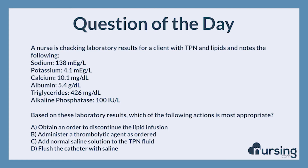Again, a nurse is checking laboratory results for a client with TPN and lipids and notes the following: Sodium, 138 mEq per liter. Potassium, 4.1 mEq per liter. Calcium, 10.1 mg per deciliter. Albumin, 5.4 g per deciliter. Triglycerides, 426 mg per deciliter. Alkaline phosphatase, 100 international units per liter.